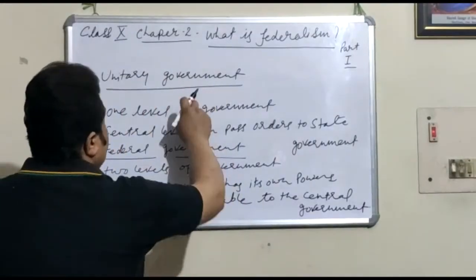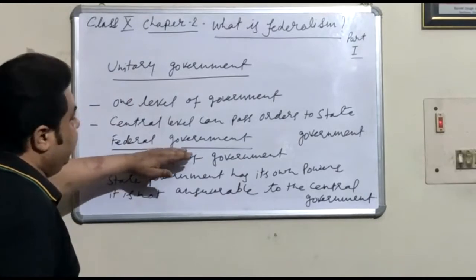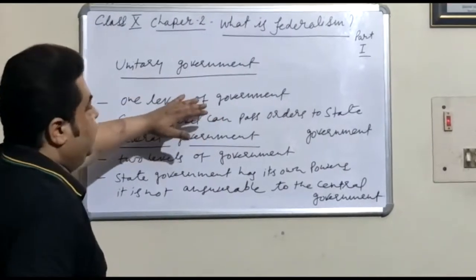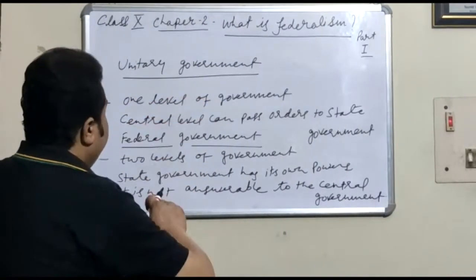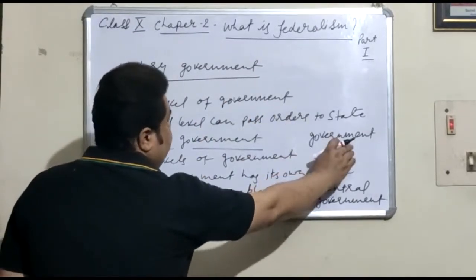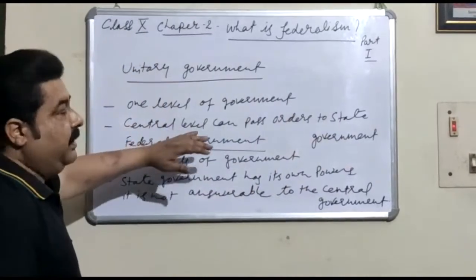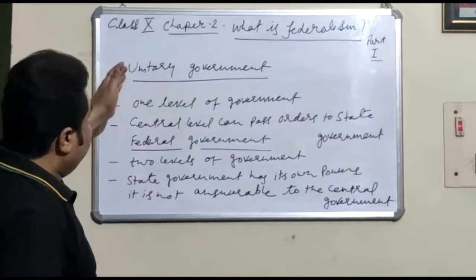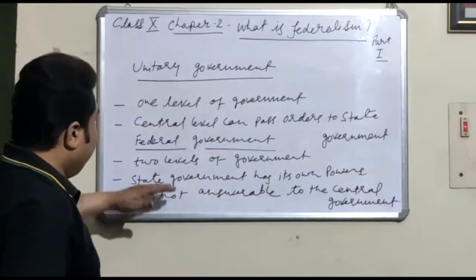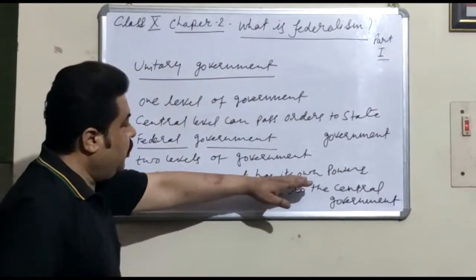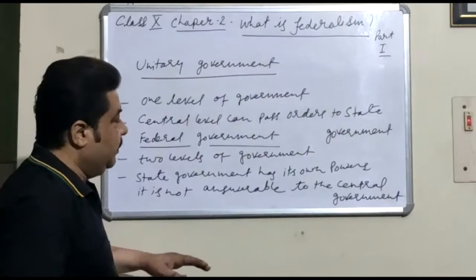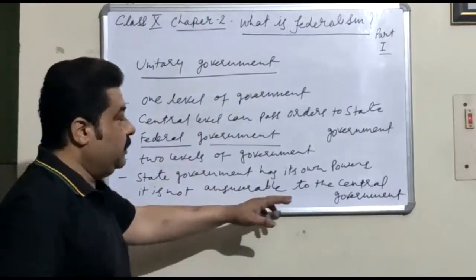In contrast between two types of government: one is the unitary system and another is the federal government. In a unitary government, there is only one level — only the central level — and powers are not given to state governments. The central level is very powerful and can pass orders to the state government, which must follow them. But in a federal government, there are two levels — central and state — that work independently. The state government has its own constitutionally given powers and is not answerable to the central government.